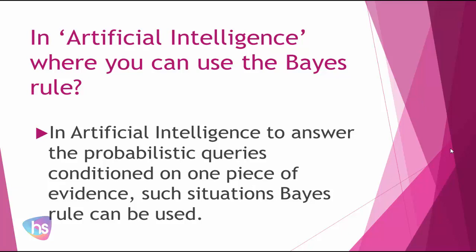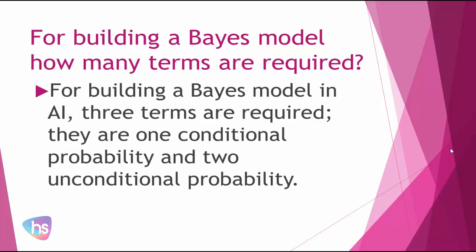The next question: in artificial intelligence, where can you use the Bayes rule? In artificial intelligence, to answer the probabilistic queries conditioned on one piece of evidence, such a situation — the Bayes rule can be used to resolve such a problem in an AI expert system.